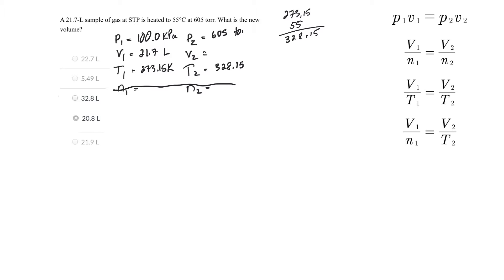605 torr. I've got problems here because those are different and I have to make them the same. I'm actually going to get rid of this one here because I want to make it the same. Let's do the calculation on that. So 605 torr multiplied by the ratio.